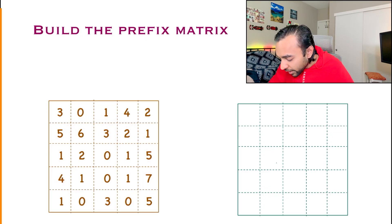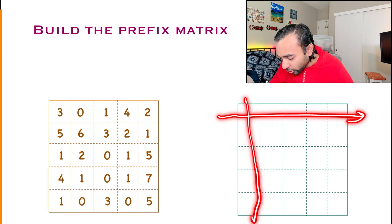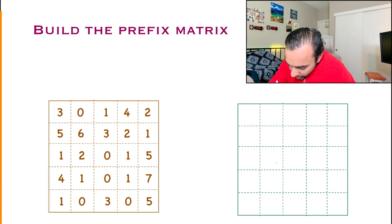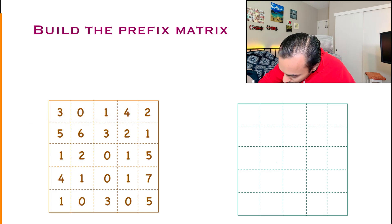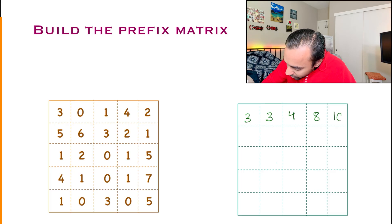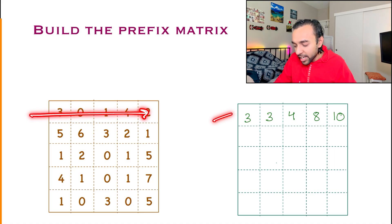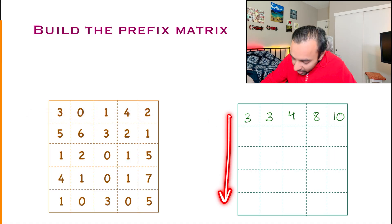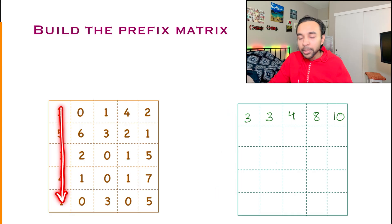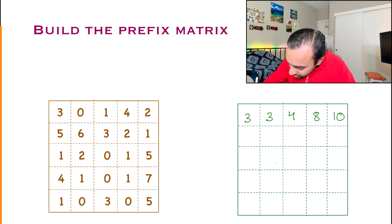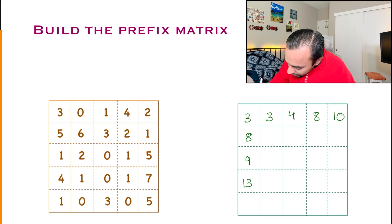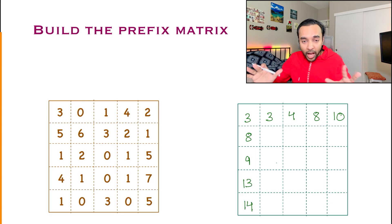I have my original array and I will build my prefix matrix of the same size. How do you fill it up? First, let me populate the first row and first column — this is relatively simple. I just cumulatively add all numbers for the first row: I get 3, then 3 again, 3 plus 1 is 4, 4 plus 4 is 8, and 8 plus 2 is 10. For the first column I also add cumulatively: first is 3, 3 plus 5 is 8, 8 plus 1 is 9, 9 plus 4 is 13, and 13 plus 1 is 14. So far so good — now comes the tricky part.